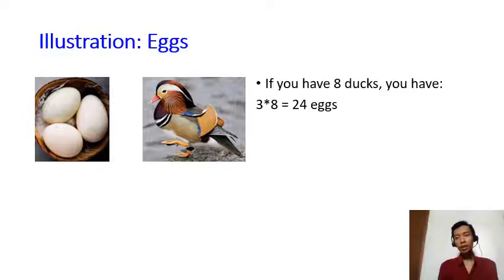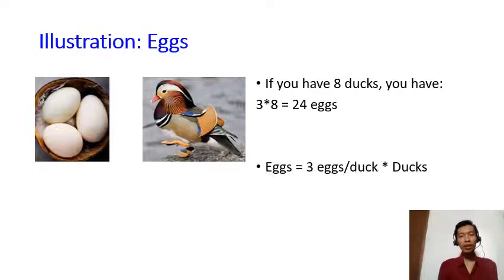It means that if you have 8 ducks, you will have 3 times 8 equals 24 eggs, right?